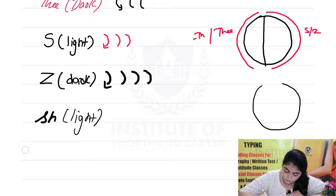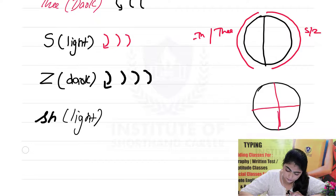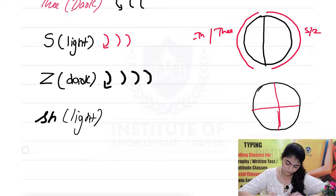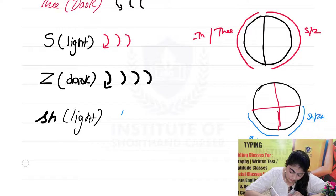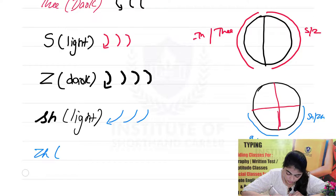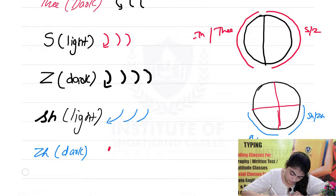Next stroke is SH. Make one more circle. F and V were on one side; SH is on the opposite side. You make it like this — SH. The last curve stroke is ZH — ZH is the dark version of SH, made like this.